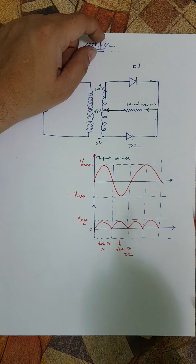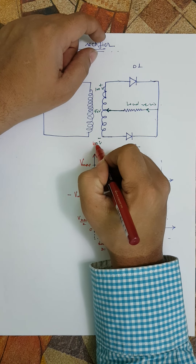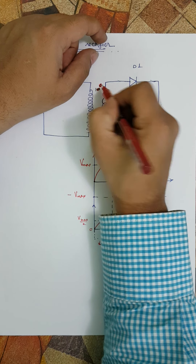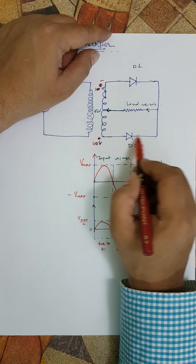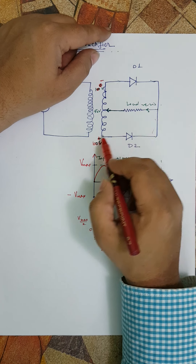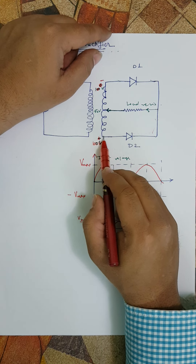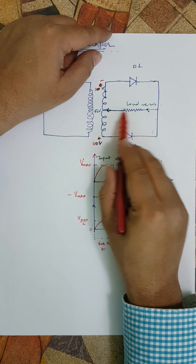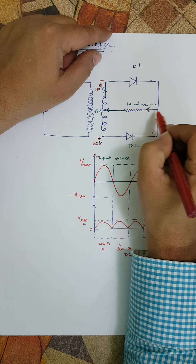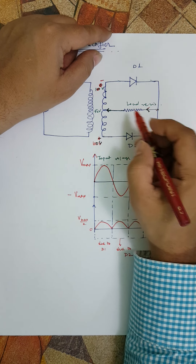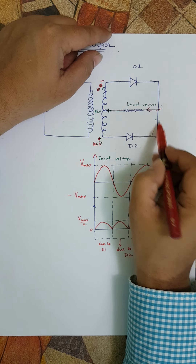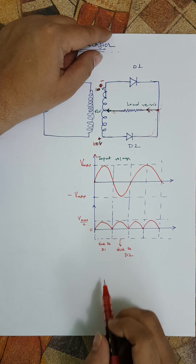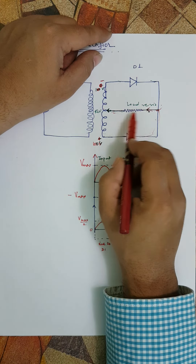In the negative half cycle, instead of zero this becomes 100 volts, and the other end becomes zero. This has high potential and this has low potential. This current would be opposed by diode D1 and can't flow that way, so the only way for current to flow is from here to here. Again the current flows from right to left through the resistance — so in both half cycles, the current direction through the resistance is the same.